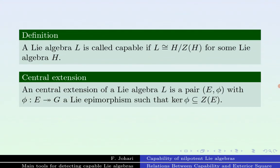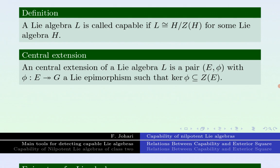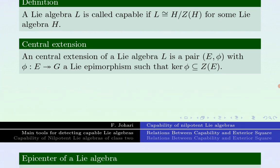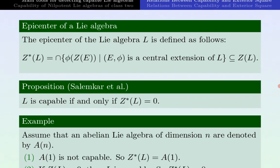A Lie-algebra L is called capable if L is isomorphic to the center factor of some Lie-algebra. Another concept useful for detecting capability is a central extension. The epicenter of a Lie-algebra is defined by using central extensions. The capability of L is equivalent to having a zero epicenter.